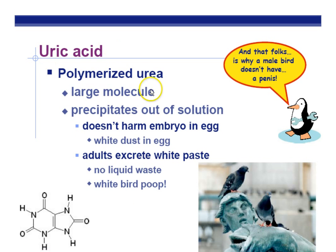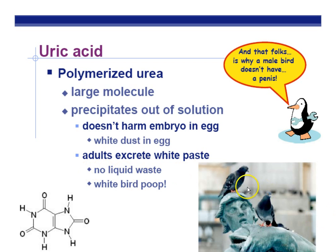Uric acid is a large molecule that precipitates out of solution. Interestingly, birds don't separately do liquid and solid waste — their excretory and digestive outputs are combined, which is what makes the white coloring in bird droppings.